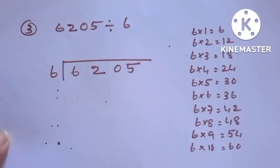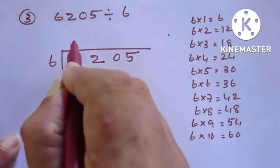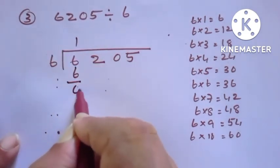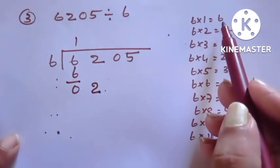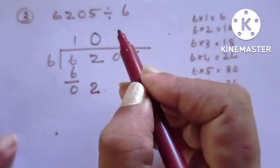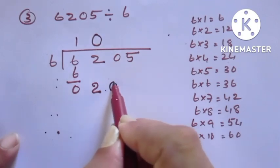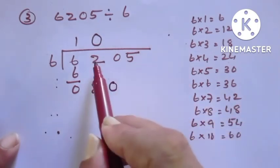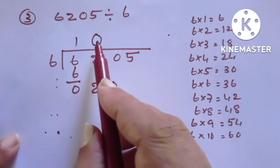Next question: 6205 divided by 6. Taking the first digit on the left side, that is 6. 6 ones are 6. Subtracting, we get 0. Bringing down the second digit, which is 2. But 2 is less than 6, meaning 2 does not go in the table of 6. Therefore, we put 0 in the quotient.